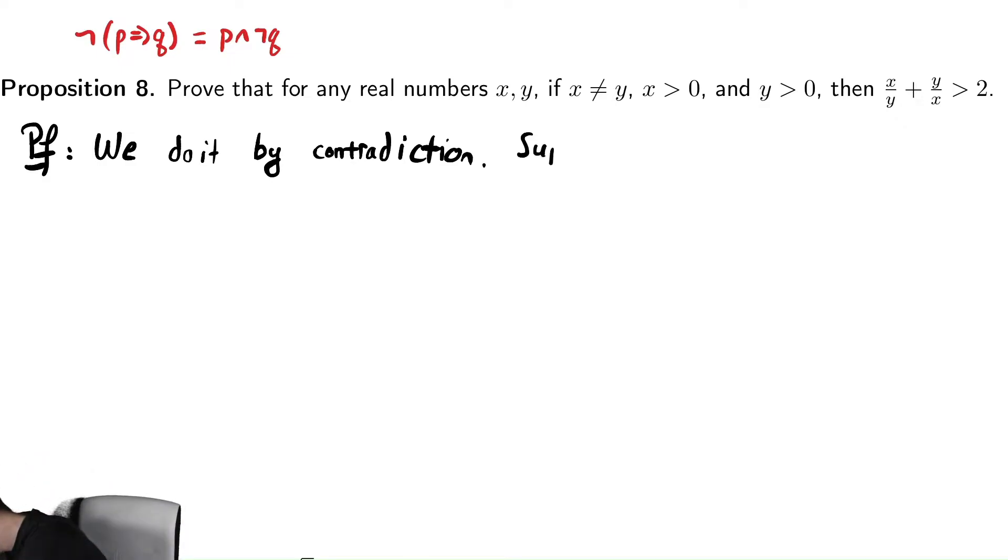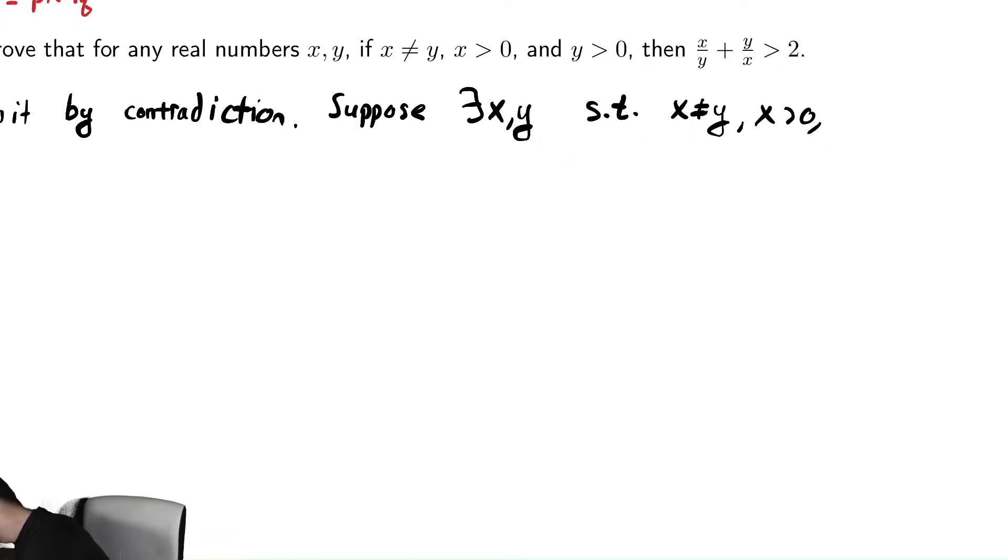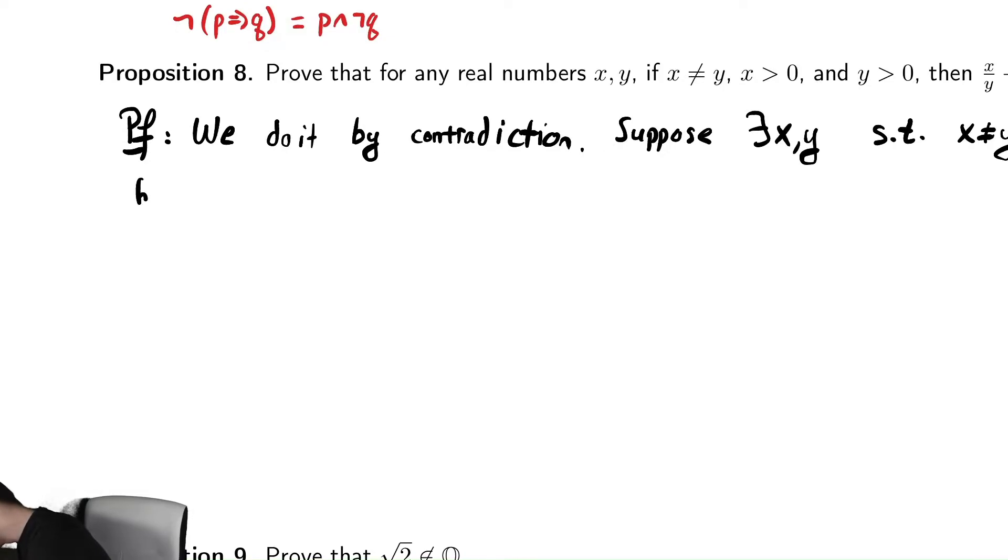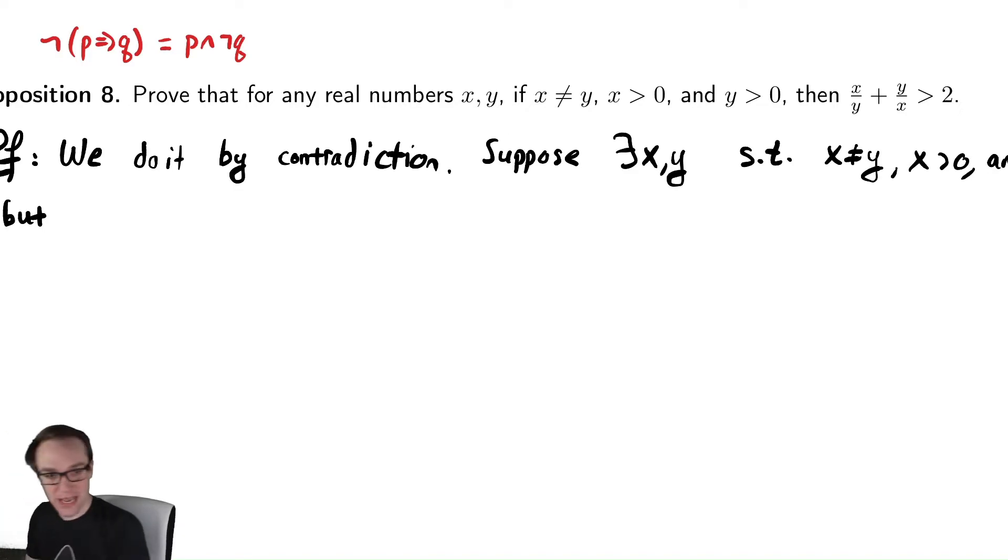So suppose there exists x and y such that they satisfy all the hypotheses. x and y are not the same, x is greater than zero, and y is greater than zero, but the conclusion is false. So but when I look at that statement, it is false. So x divided by y plus y divided by x is less than or equal to two.